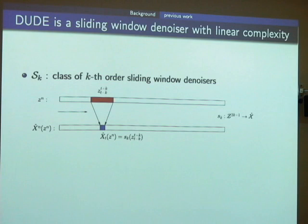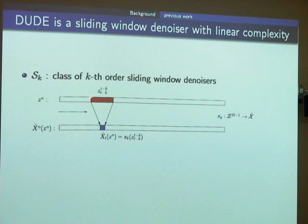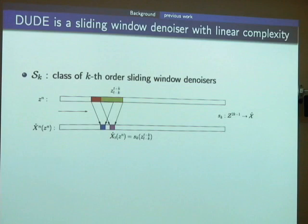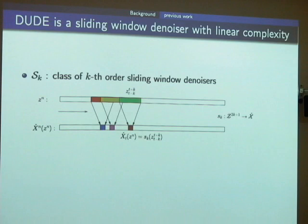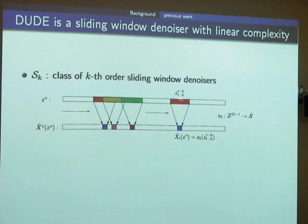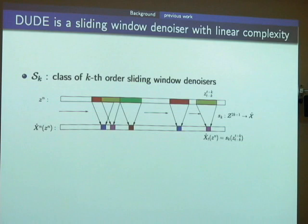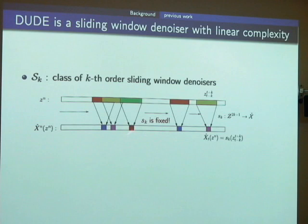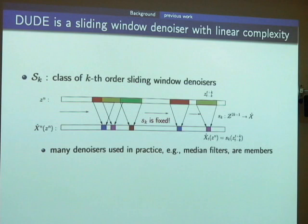A K-th order sliding window denoiser is defined by a mapping S_K, which maps a noisy (2K+1)-tuple to a reconstruction symbol. At each location t, it looks at the noisy (2K+1)-tuple centered around time t, applies rule S_K, and slides over the noisy sequence. If it sees different contexts and symbols, it gives different reconstructions. The important thing is: if it sees the same noisy symbols, it gives the same reconstruction. The rule S_K is fixed over the whole noisy sequence. This class includes many practical denoisers — median filters, morphological filters — and DUDE is also a member with window size K.